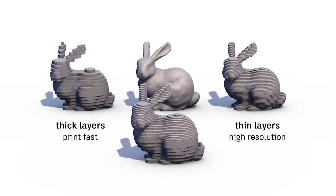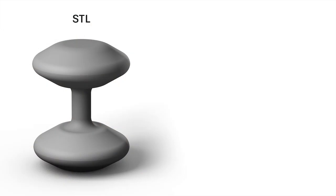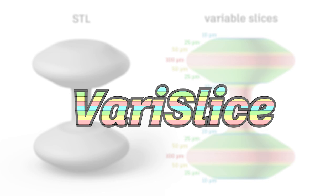What if you could have the best of both in the same print? Hi, Steve here from Autodesk. We wrote an algorithm that automatically slices STL files at variable layer heights to optimize for both print speed and print resolution. We like to call it VeriSlice.